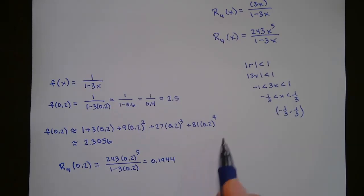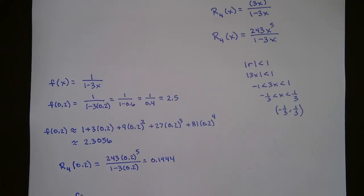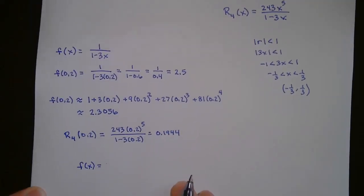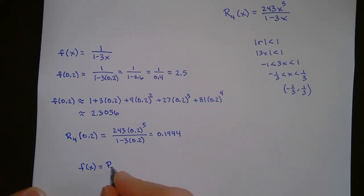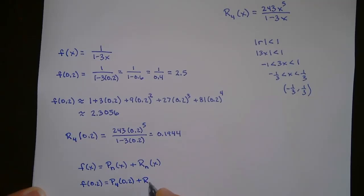This makes sense because the approximation plus R₄ takes into account all the rest of the terms. So if the actual value is 2.5, it should be the difference between the Taylor approximation and the true value. From what we were talking about earlier, f(x) has to equal the Taylor polynomial of order n plus any remainder Rₙ(x). So f(0.2) equals the fourth order Taylor polynomial at 0.2 plus the truncation error R₄(0.2).